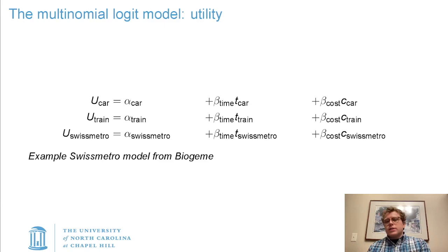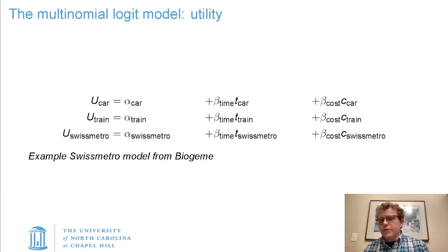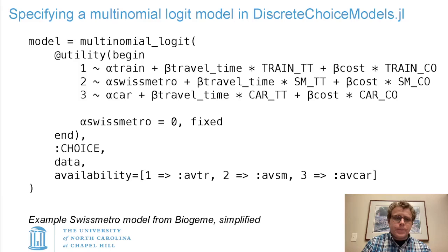You're going to have three utility functions that define the utility or value of each of these options for each decision maker. You have a constant that defines their relative values, all else equal. You have two coefficients that are constrained to be the same across all alternatives: a travel time coefficient multiplied by the travel time specific to each alternative, and a cost coefficient multiplied by the cost of each alternative. You could also add something like income, where you'd have a separate coefficient for the effect of income on car, train, or Swiss Metro.